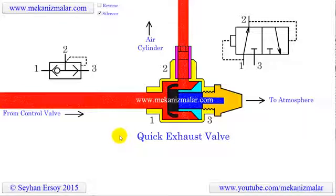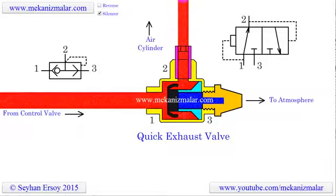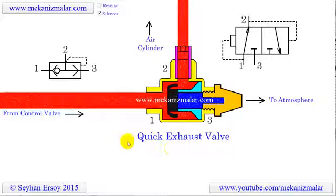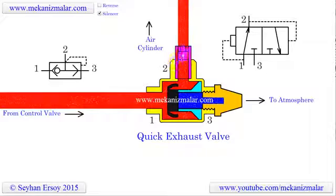Compressed air flows from the directional control valve and via the quick exhaust valve to the cylinder. In order to achieve the full benefit of the quick exhaust function, the valve must be connected directly to the port of the cylinder.